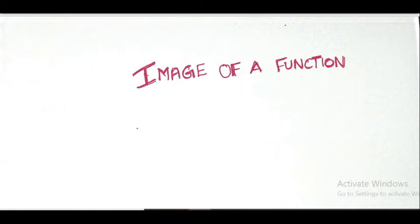Hello students, welcome to this channel. Today we are going to learn about the topic 'image of a function'. In this topic, the definition and some examples are covered. A previous topic is one-to-one function and Cartesian binary relations, which we have already learned. Now we are moving on to the next topic: image of a function.